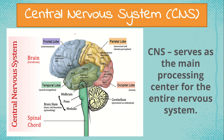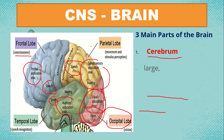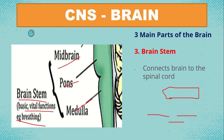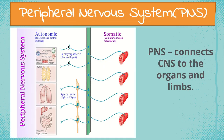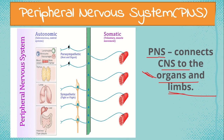The PNS connects to organs like the heart and kidneys, and to limbs like shoulders, hands, legs, and feet. Under the peripheral nervous system, we have two divisions: the autonomic and the somatic.